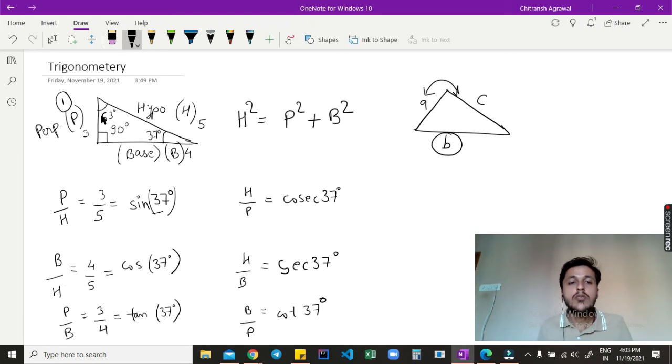So these are just the ratios. We are just naming these ratios of a right angle triangle side to some name. Later on in this trigonometry, we are going to experience how these ratios are interlinked with each other and how we can use them to calculate various angles of this triangle.